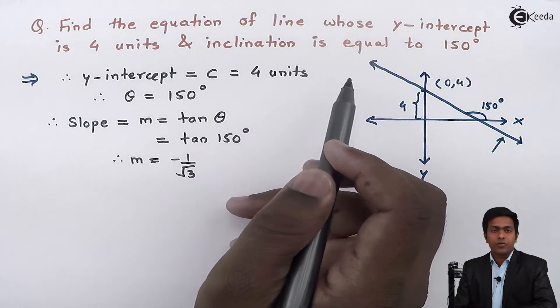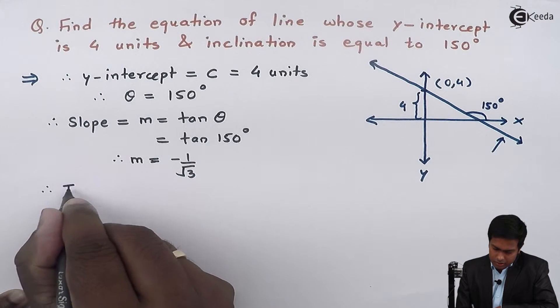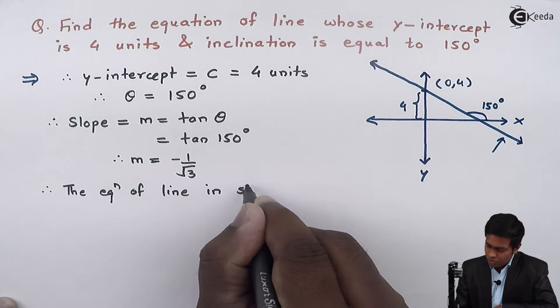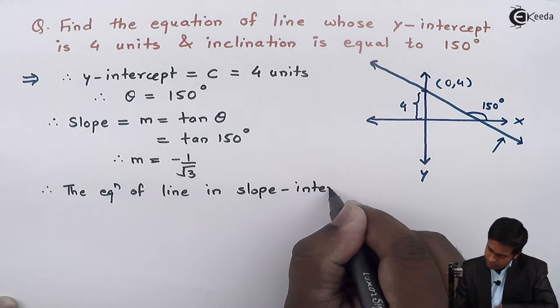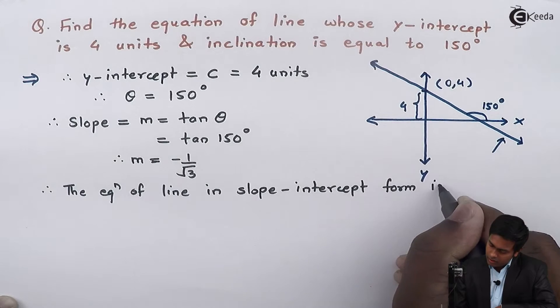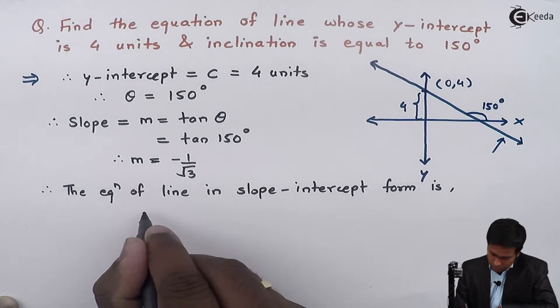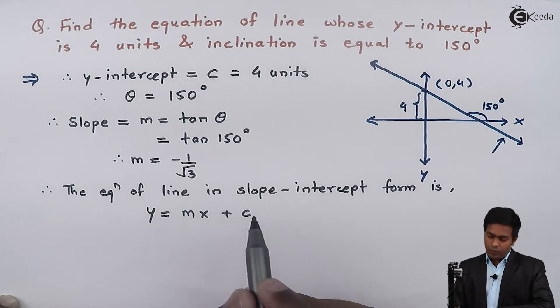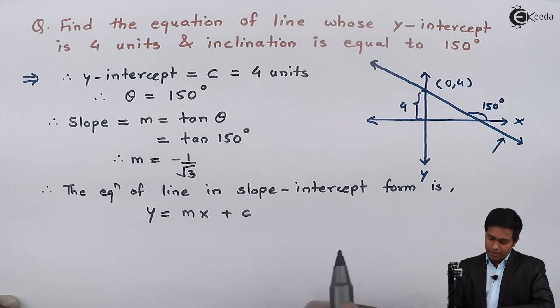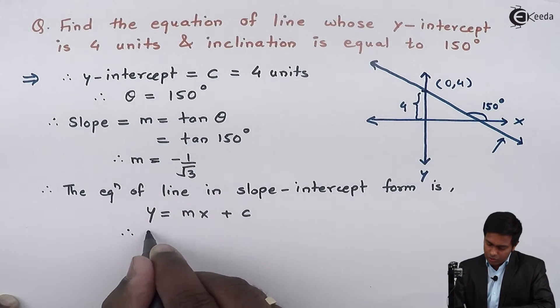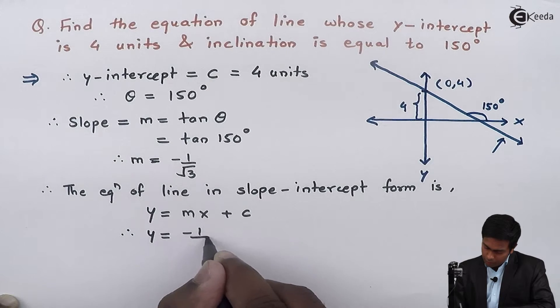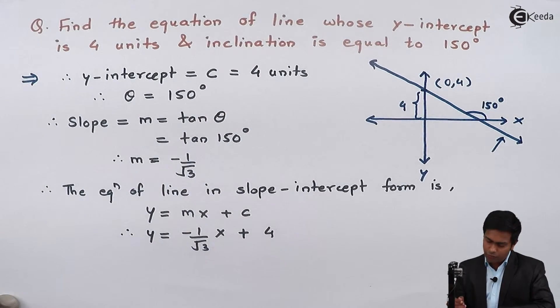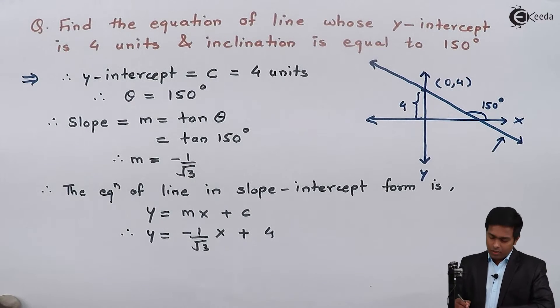Now the intercept is given as 4 units. So directly I'll say therefore the equation of line in slope-intercept form is y = mx + c. So this is the formula to find equation of line in slope-intercept form. Now m is given as -1/√3. So I'll substitute the value. Therefore y = -1/√3 × x + c, where c is y-intercept which is given as 4 units. So let's solve this.